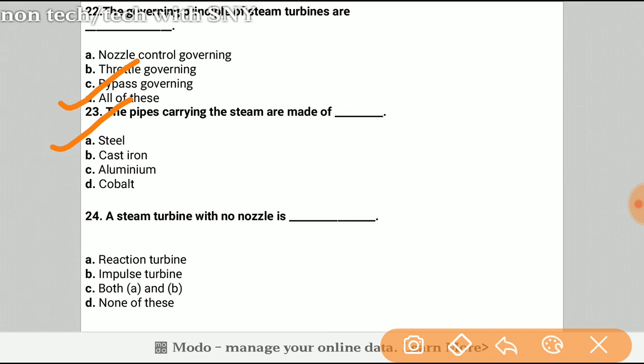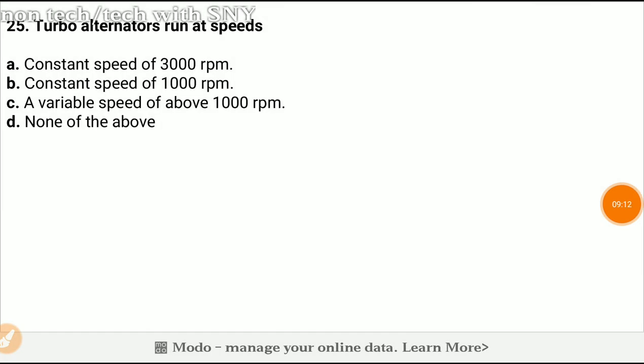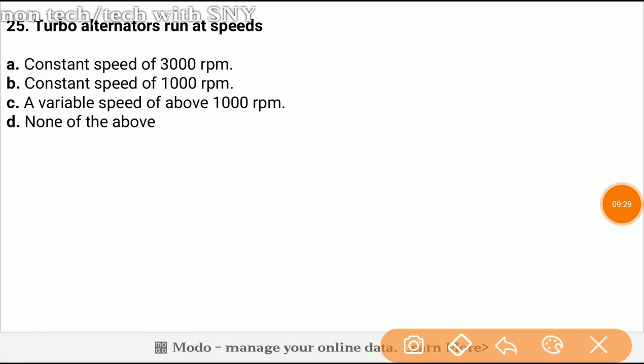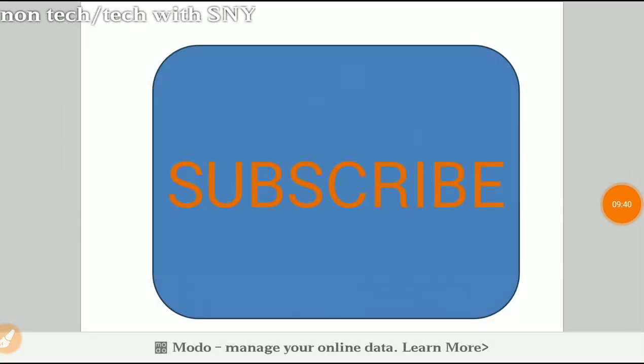Question 24: A steam turbine with no nozzle is called? A, a reaction turbine. Question 25: The turbo alternators run at speeds of? The correct option is B, constant speed at 1000 RPM.